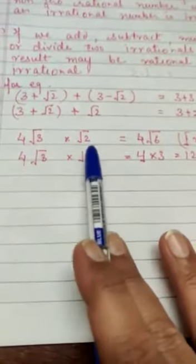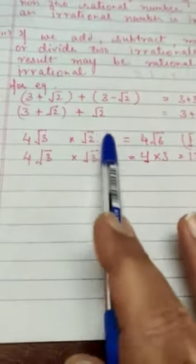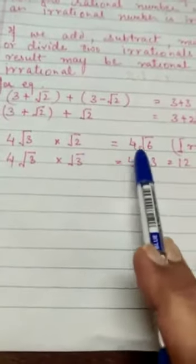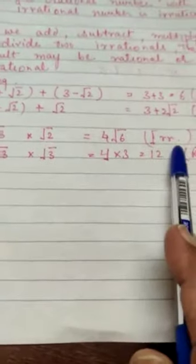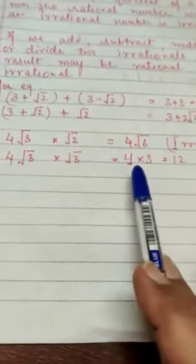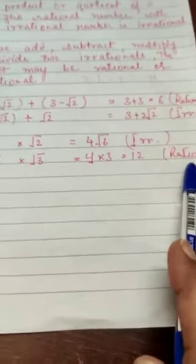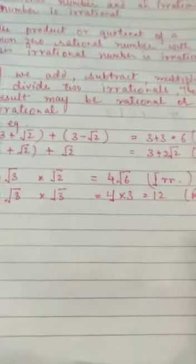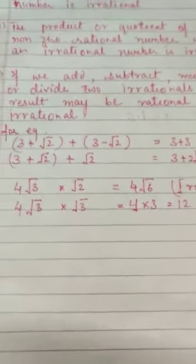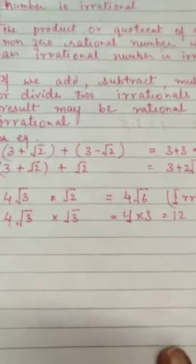Similarly, difference can also give us rational or irrational. 4 root 3 into root 2 - this is also an irrational number, and this is also an irrational number. Their product is 4 root 6, which is an irrational number. Similarly, 4 root 3, if we multiply by root 3, we get 4 into 3, that is 12, which is a rational number. Similarly, when we divide rational or irrational numbers, we can get either a rational or irrational answer.